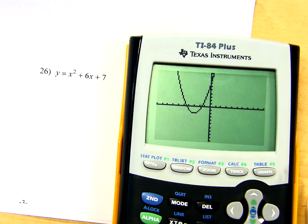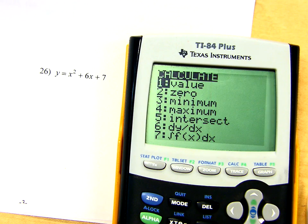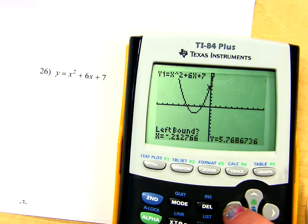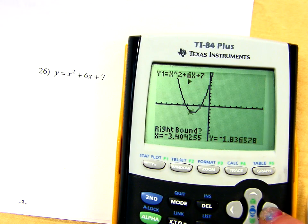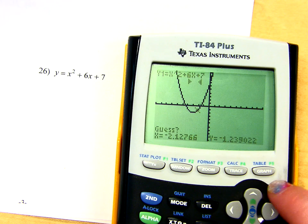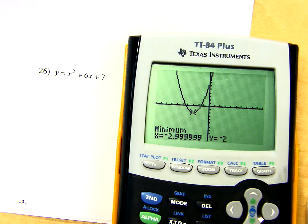Make sure you're deciding for yourself, is this a max or a min before you go away from this menu? So this would be a min again. So second calc, choice three. Go to the left, go to the right, and then we'll be done. Left, right. Did you get what I got? Negative 3, negative 2. Yep.